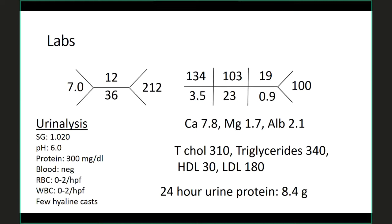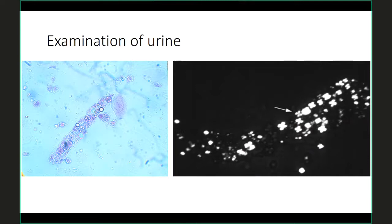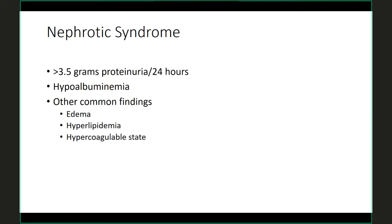His 24-hour urine protein collection comes back at 8.4 grams. So here's somebody with edema, proteinuria, low serum albumin, and hypercholesterolemia — something is clearly going on with his kidney. When you spin his urine and look under light microscopy, you see different-sized particles. When you polarize it, you see Maltese crosses, which are likely lipid droplets in the urine, associated with nephrotic syndrome. So this is a classic case of nephrotic syndrome: greater than 3.5 grams of proteinuria on his 24-hour collection, low albumin, edema, hyperlipidemia. He's also certainly at risk for being hypercoagulable.